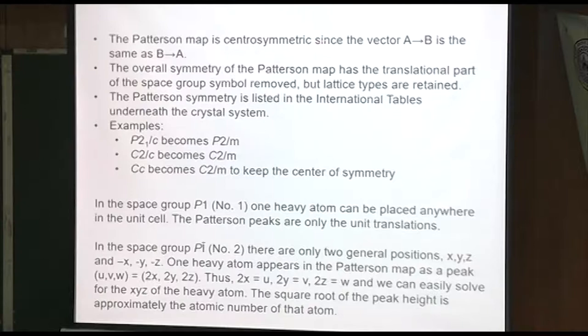It's centrosymmetric. The vector from B to A is the same as the vector from A to B. So you have centrosymmetry. The symbol for the Patterson symmetry is in the international tables, right below the space group symbol. You take away the translation. So P21 over C becomes P2 over M. C2 over C becomes C2 over M.